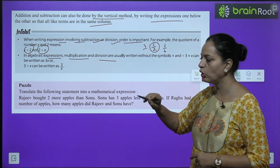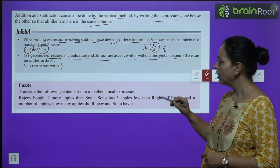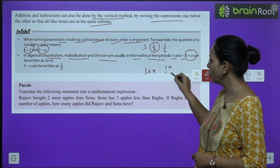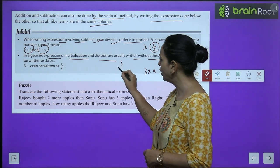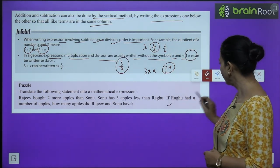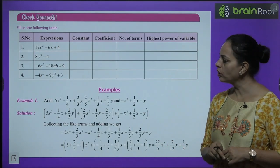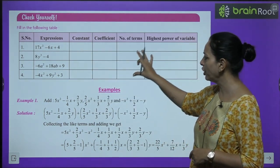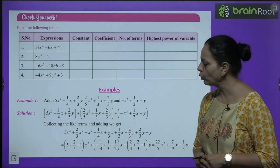In algebraic expressions, multiplication and division are usually written without their symbols — so 3 × x is written as 3x, and 3 ÷ x is written as 3/x. Now, check yourself: a table is given — find the constant, coefficient, number of terms, and highest power of the variable for each expression.